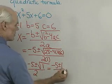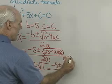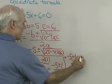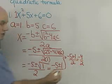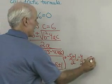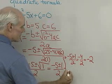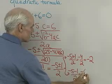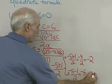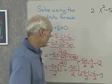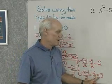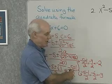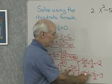And so this will give me my two solutions. My first solution is going to be negative 5 plus 1 over 2, which is negative 4 over 2, which comes out to be negative 2. And my other solution is negative 5 minus 1 over 2, which will be negative 6 over 2, or negative 3.